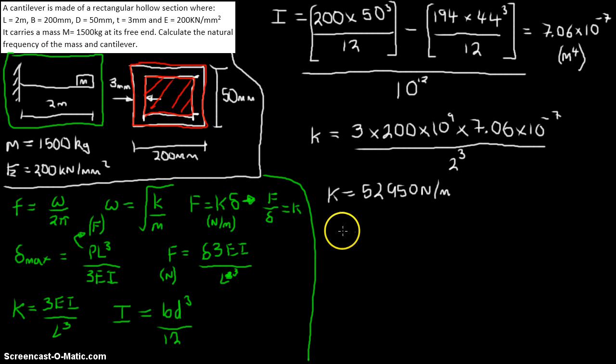And then, penultimate step, we can work out our omega, which would be our stiffness that we just worked out, 52,950 divided by the mass given in the question, which is 1,500, and square root the whole thing, and then that should come out as 5.94 radians per second.